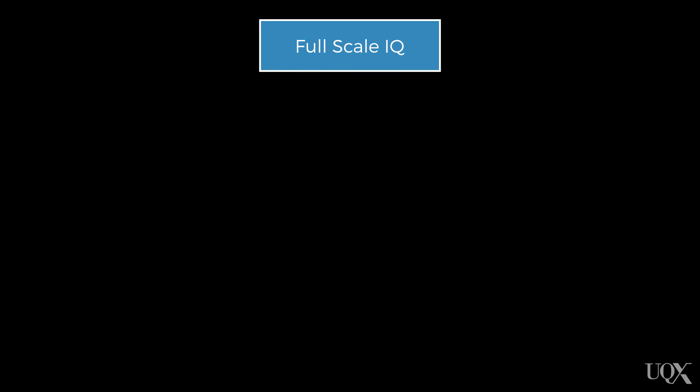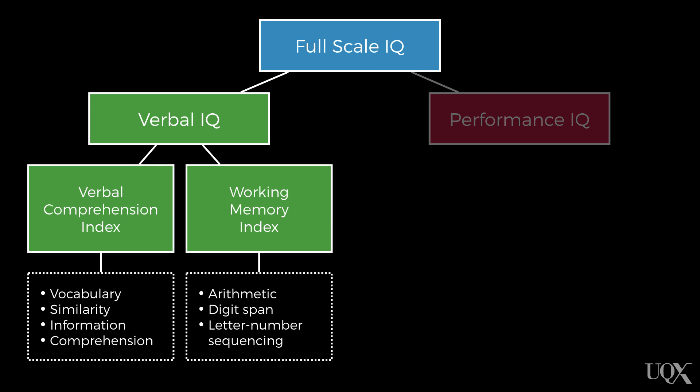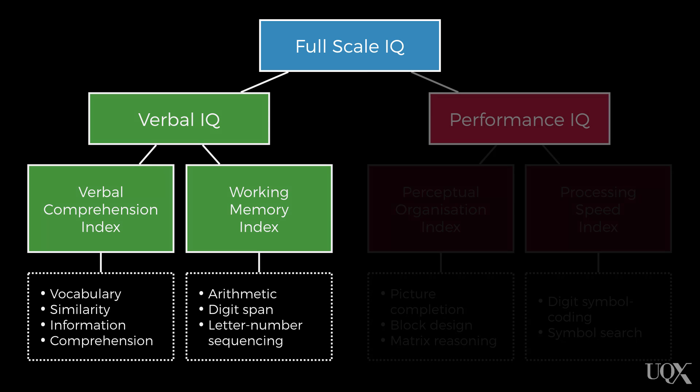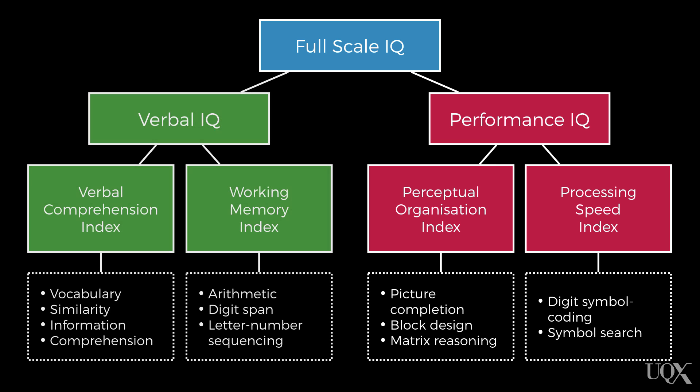When people complete the WAIS, they receive a score that represents their overall, or full scale, IQ, which is broken down into two components: verbal IQ and performance IQ. Each of these has two secondary indices. For verbal IQ, they are verbal comprehension and working memory. For performance IQ, they are perceptual organisation and processing speed. These additional performance indicators provide people with fairly detailed information about their performance across a number of different domains from the test.